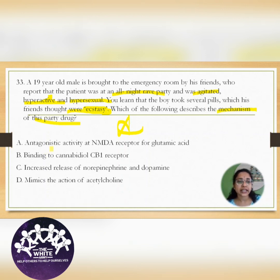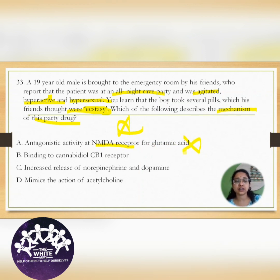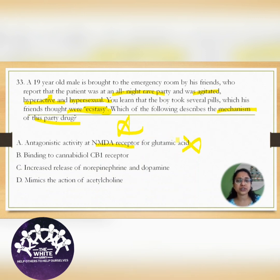Coming to the options — Option A: antagonistic activity at the NMDA receptor for glutamic acid. This is not the answer because NMDA receptor antagonists are mainly the phencyclidine group of compounds, and also ketamine. There will be more dissociative anesthesia-type features, so we won't see hypersexuality or hyperactiveness. Option A is not the answer.